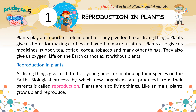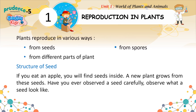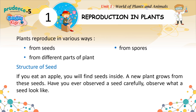All living things give birth to their young ones for continuing their species on the earth. The biological process by which new organisms are produced from their parents is called reproduction. Plants are also living things. Like animals, plants grow up and reproduce. Plants reproduce in various ways: from seeds, from spores, and from different parts of the plant.